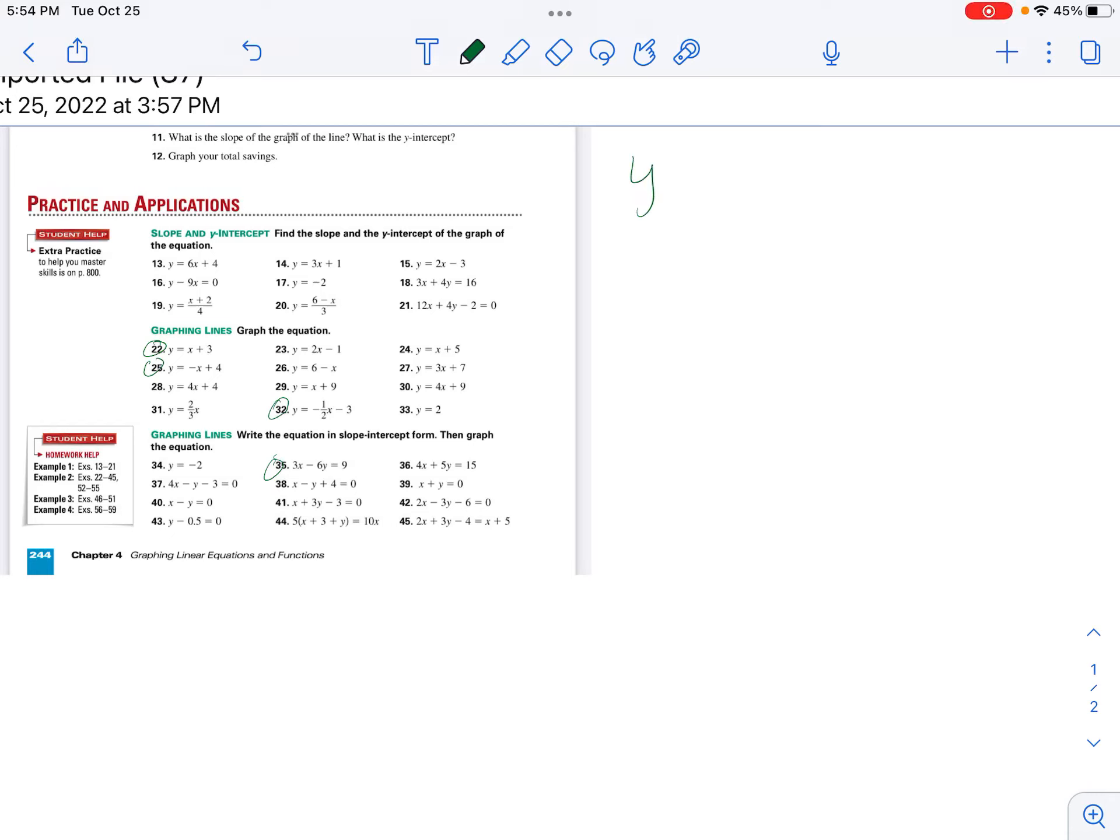Number 32 is y = -1/2x - 3. So again I write my formula y = mx + b.